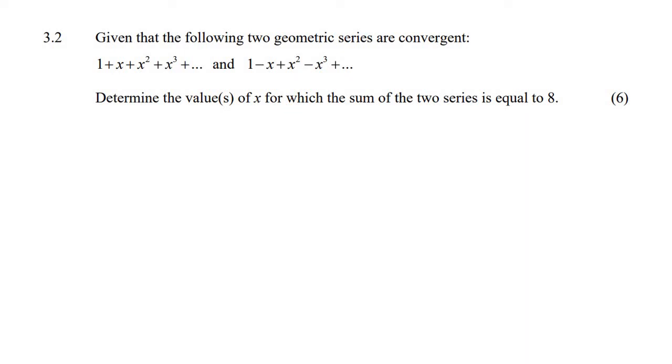Given that the following two geometric series are convergent. These are geometric, don't forget that, are convergent. What does convergent mean? Convergent means that the ratio is somewhere between minus 1 and 1. You need to know these things. When they say convergent, it means that the ratio is somewhere between minus 1 and 1, and remember these are also geometric.